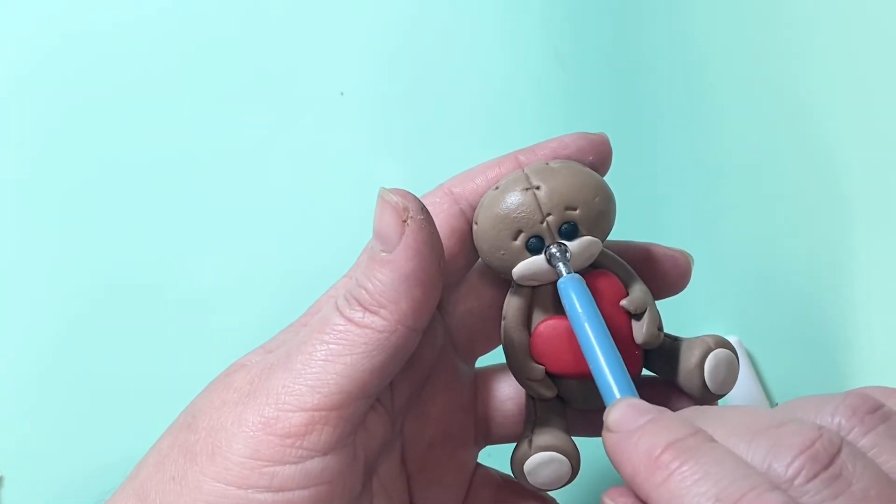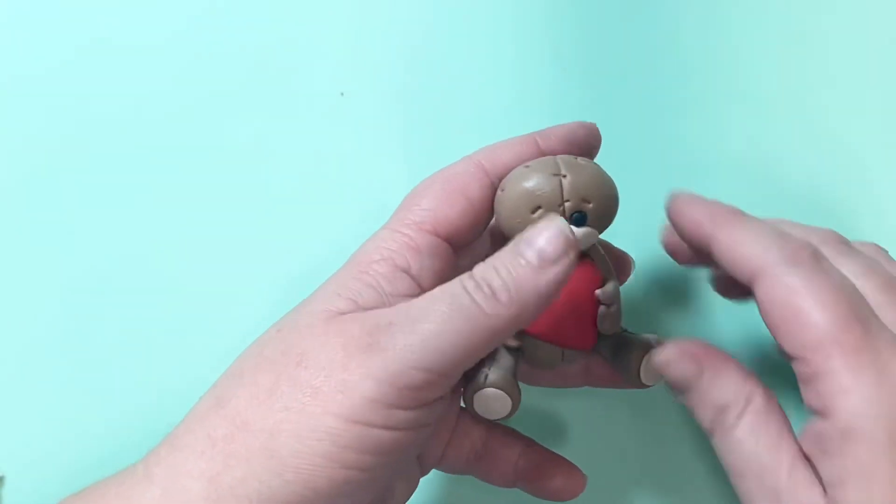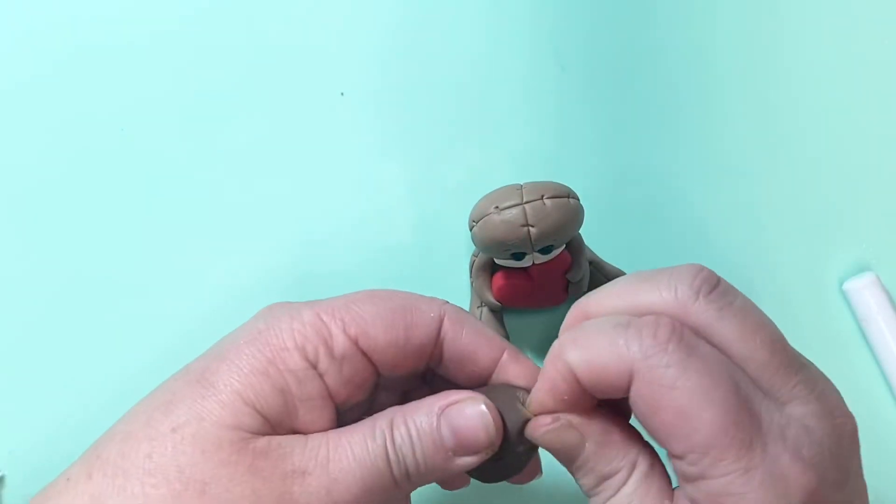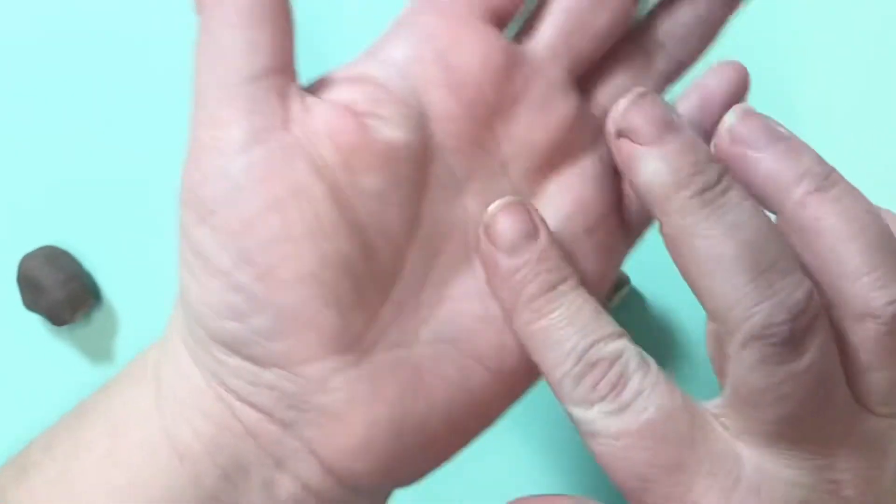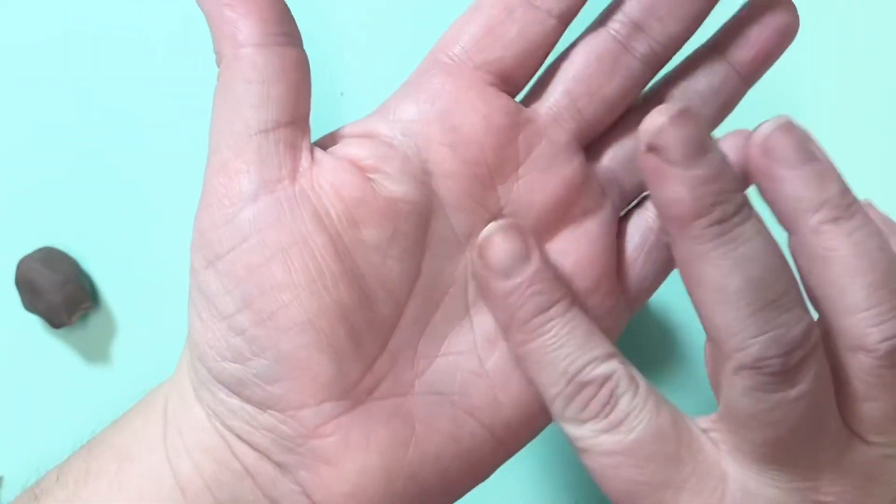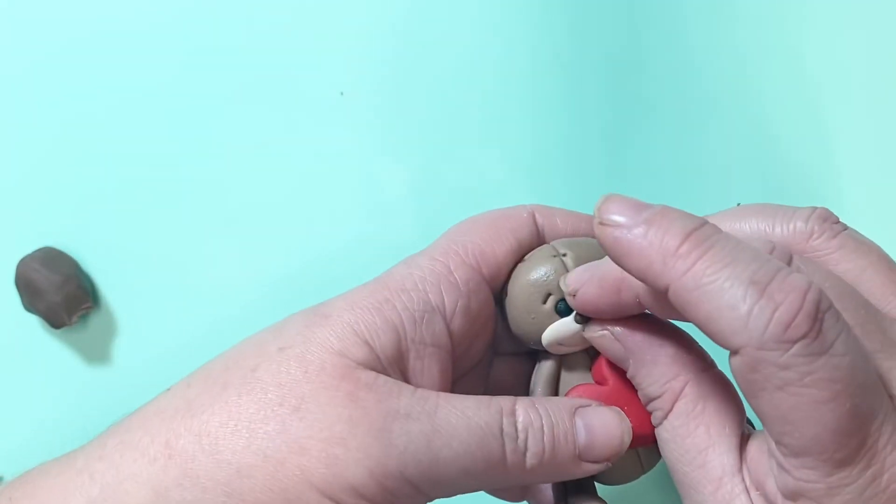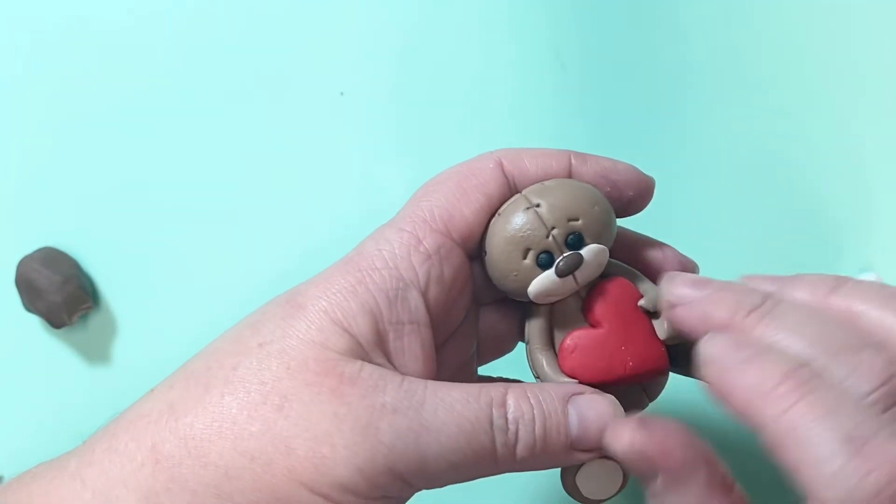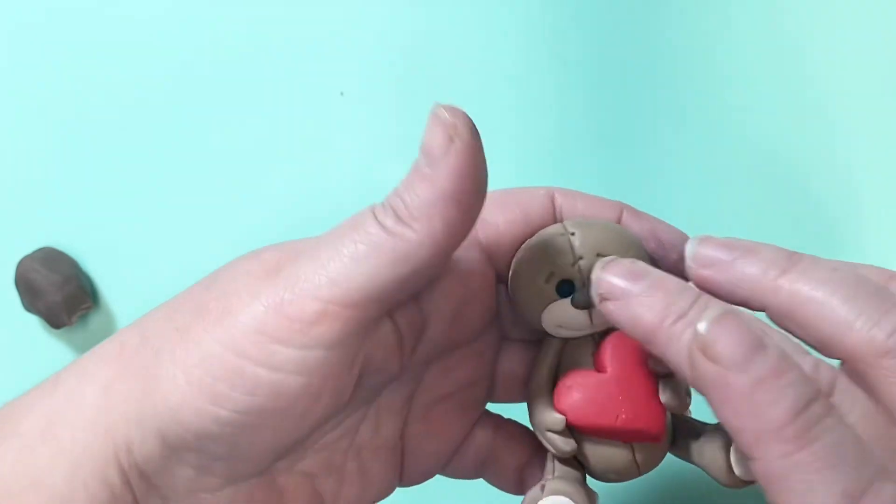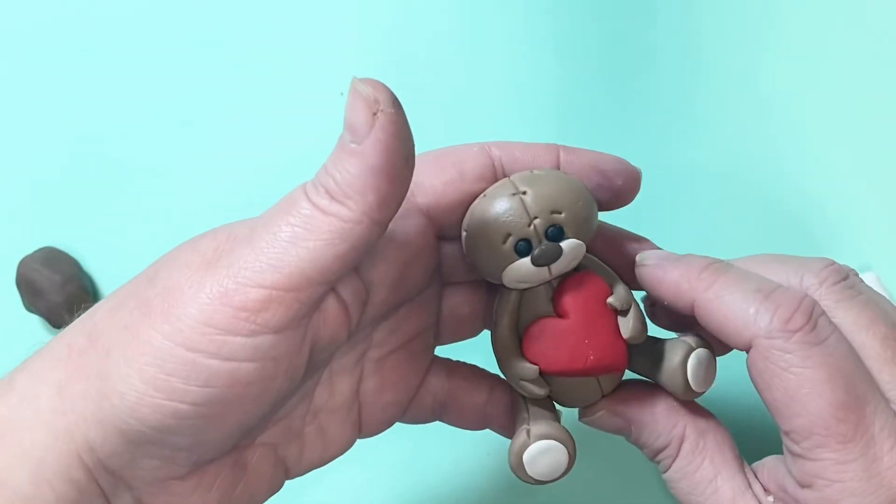Use a ball tool to indent where you're going to make the nose and get some darker brown paste this time. Roll it into a ball and then a tiny little oval shape and press that onto the face for his nose. And press gently into place. There you go.